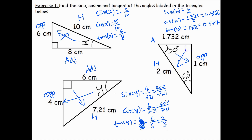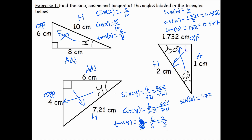Lastly, for 60 degrees, opposite the right angle is our hypotenuse. Opposite 60 is our opposite, and the remaining side is the adjacent. Sine of 60 is opposite over hypotenuse — 1.732 over 2 — which is 0.866. Cos of 60 is adjacent over hypotenuse, which is a half. And tan of 60 is opposite over adjacent — 1.732 over 1 — which is 1.732.